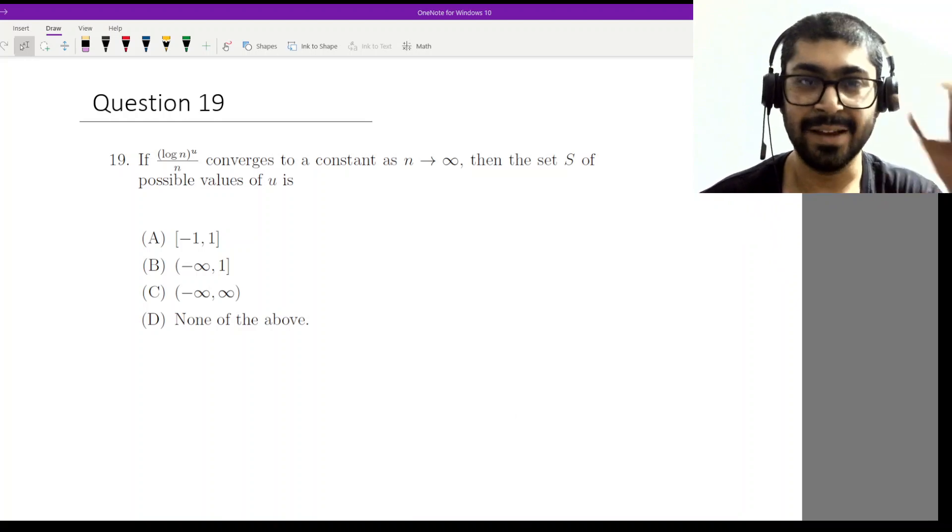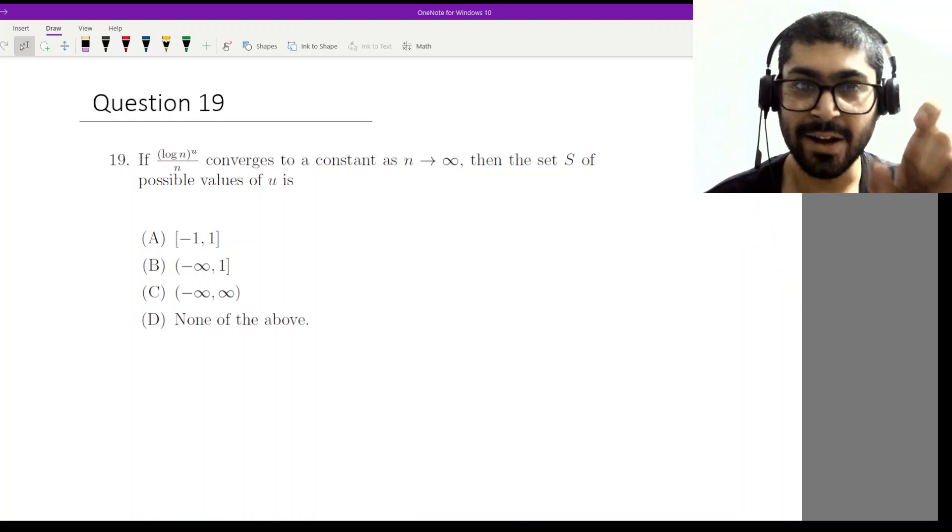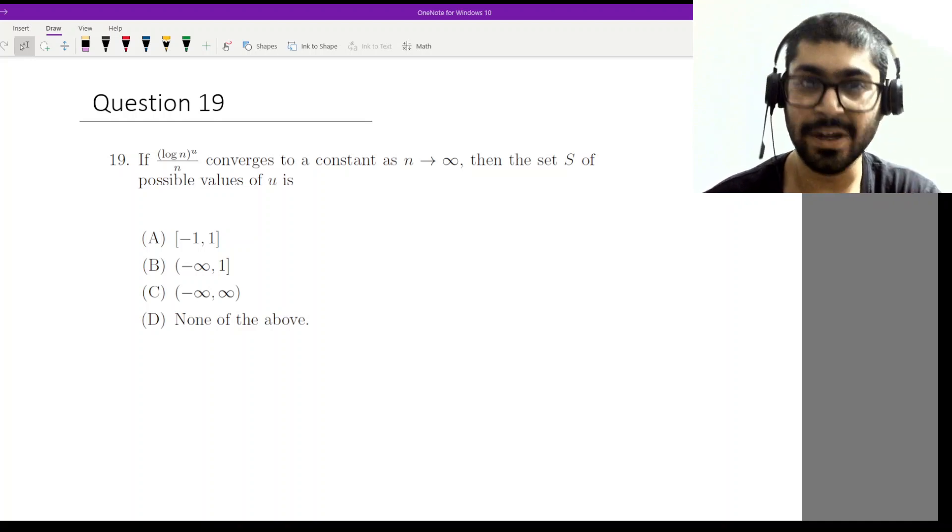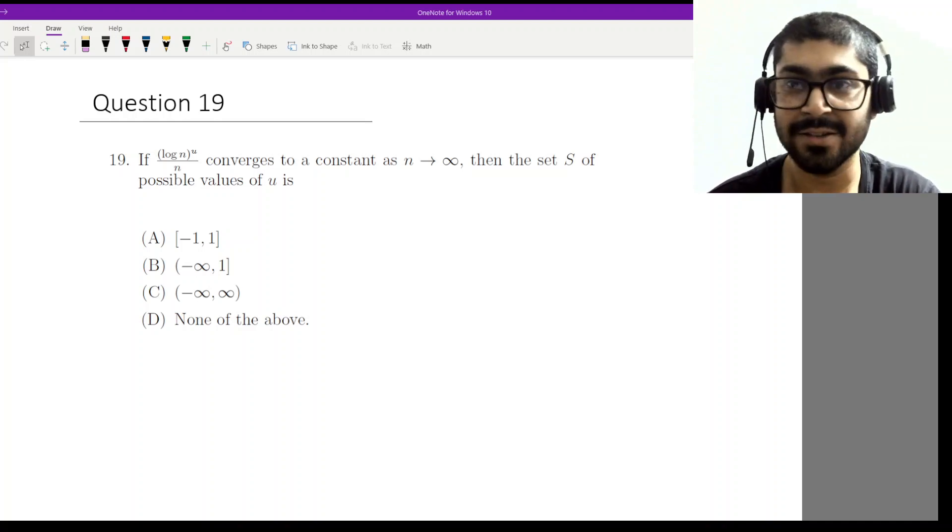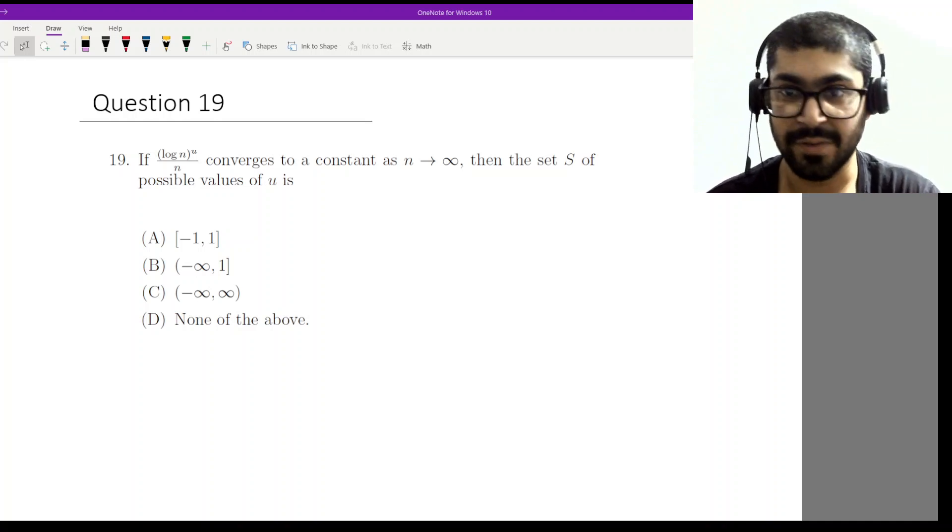In this question we are looking at a function log n to the power u by n and we have to figure out the range of u so that this limit converges to any constant. It might be 0, it might be something else, any constant as n tends to infinity.